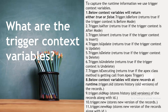The following context variables return either true or false: trigger.isBefore, trigger.isAfter, trigger.isInsert, trigger.isUpdate, trigger.isDelete, trigger.isUndelete, and trigger.isExecuting.